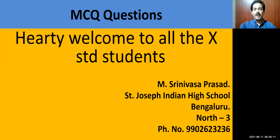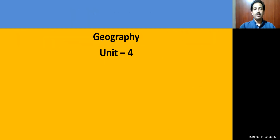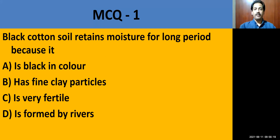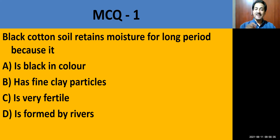Dear students, hearty welcome. Let us go to lesson number 4 — Geography: Soils of India. The first question: Black cotton soil retains moisture for a long period because — it is black in colour, it has fine clay particles, it is very fertile, or it is formed by rivers.